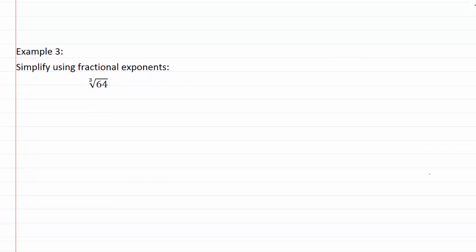Now let's take a look at example three. So example three says simplify using fractional exponents and we've got the third root of sixty-four. So the first thing that I want to do here is actually break down my sixty-four and see whether or not I can come up with some number raised to an exponent so I can use my rules about exponents.